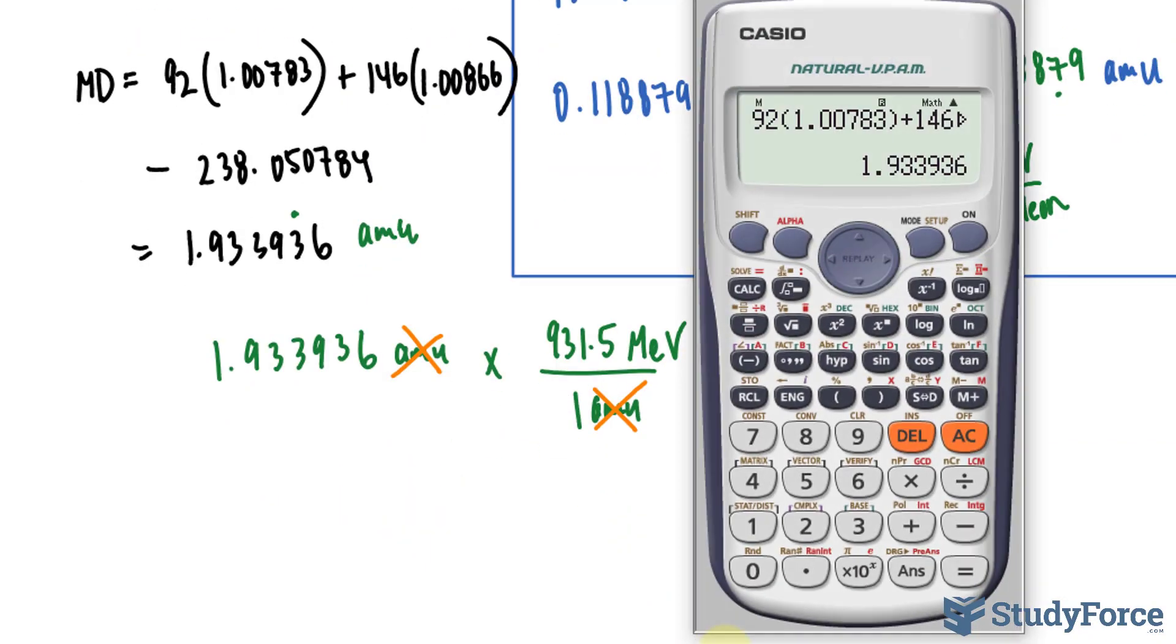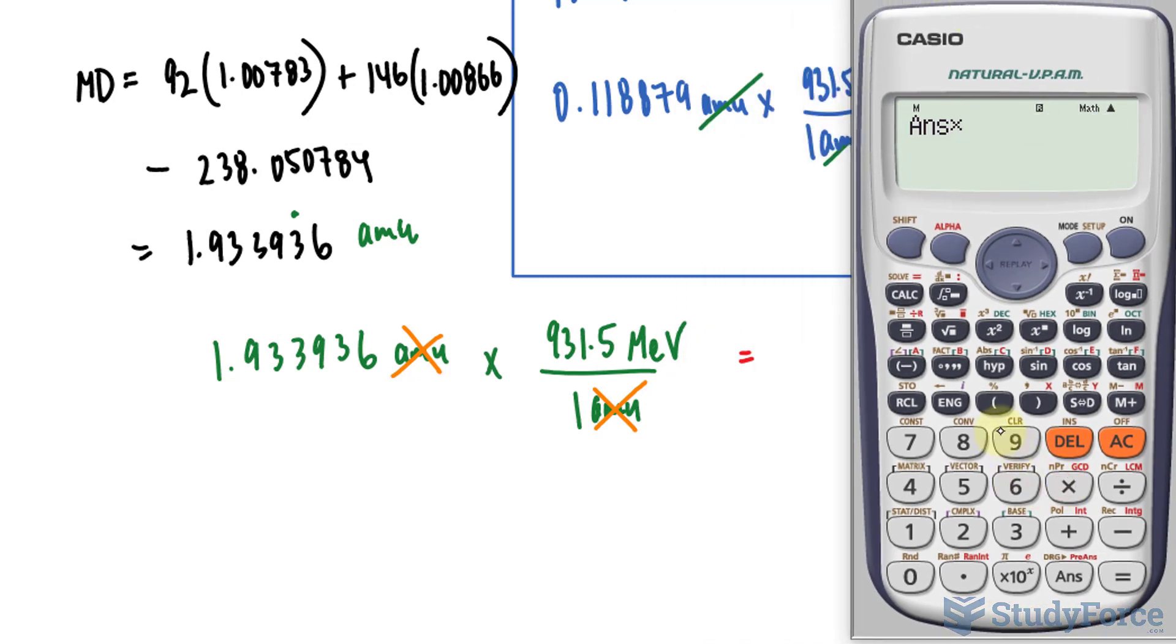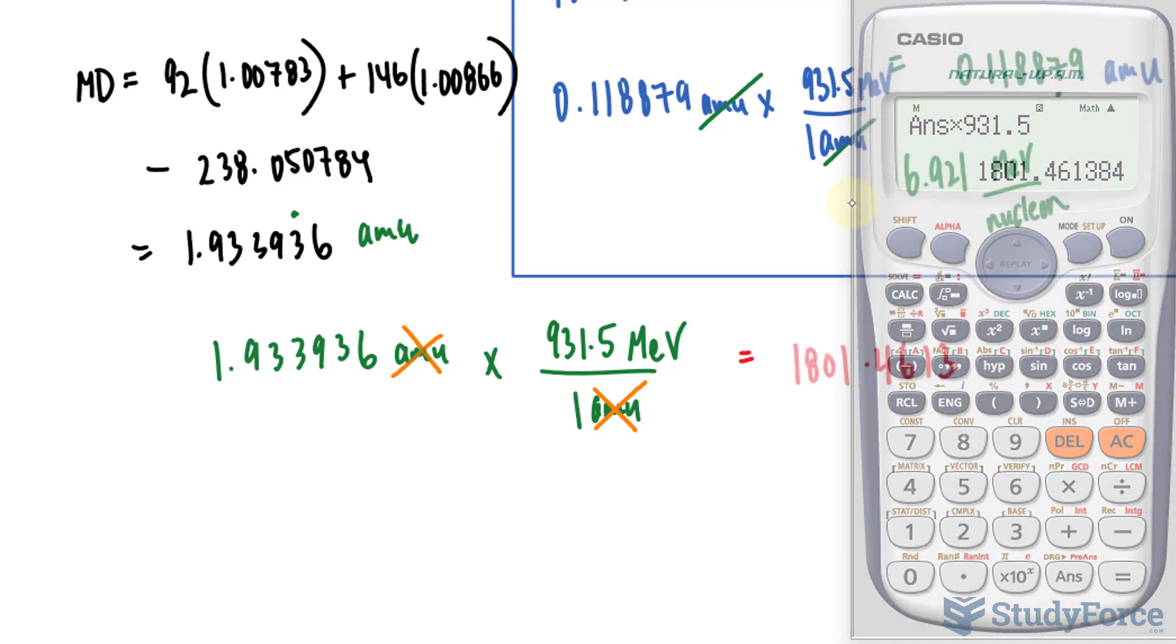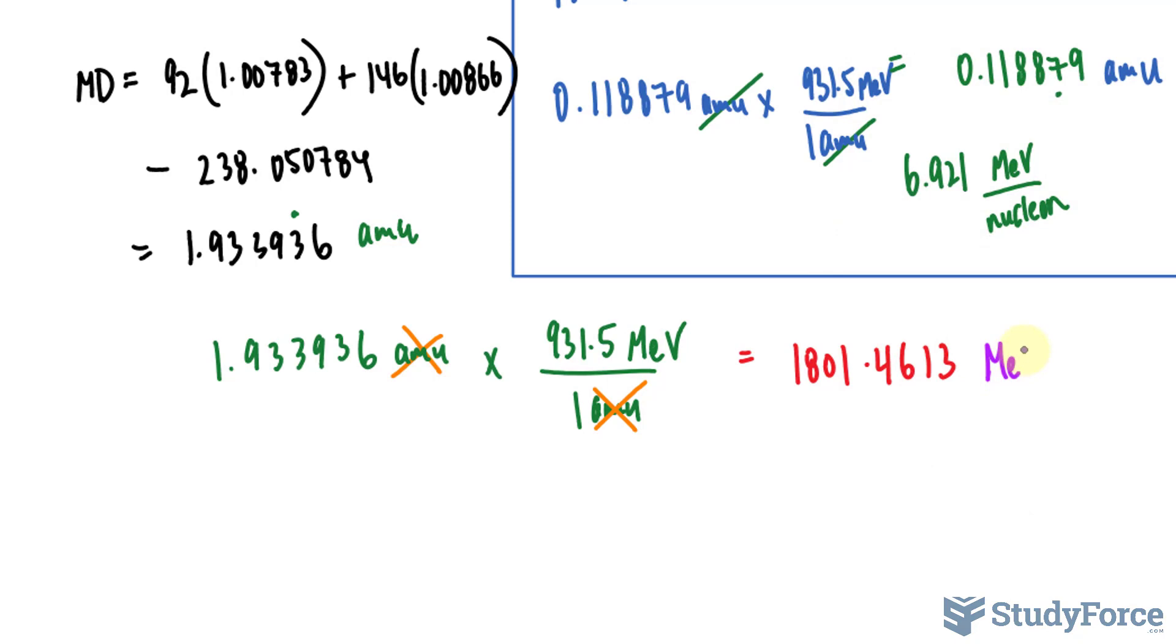So I'll take the value that's currently on my calculator and multiply it to 931.5. And we end up with this value. The units are mega electron volts. Don't round this number yet.